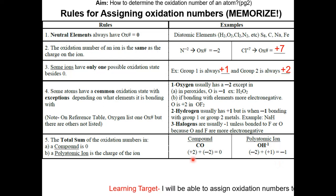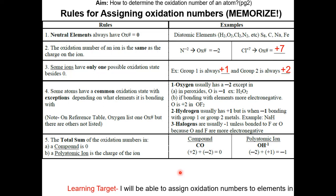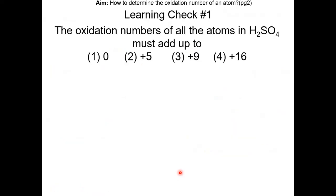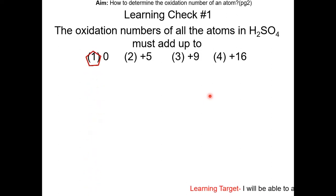Make sure you memorize these five rules for the Regents exam. For the rest of the lesson, we'll be practicing applying these rules. Learning check number one: the oxidation numbers of all atoms in H2SO4 must add up to what? The answer is choice one — zero. That is rule number five.